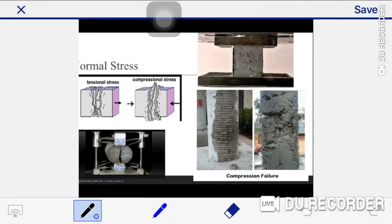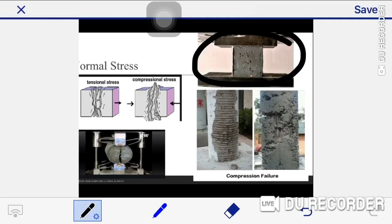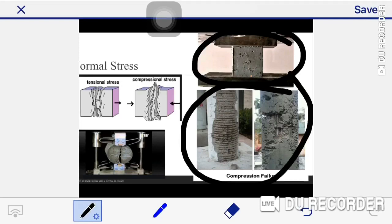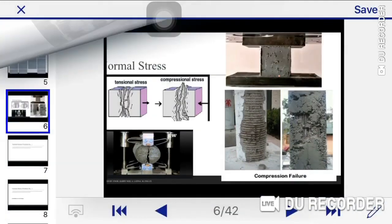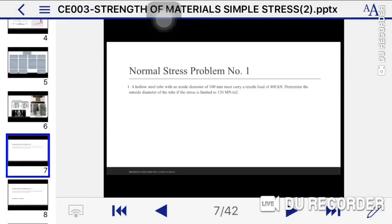For the compressive test, we determine how strong the concrete is in terms of compression. This part is one good example of a compression failure. It means the load applied exceeded the maximum strength of the material, so it experienced compression failure.